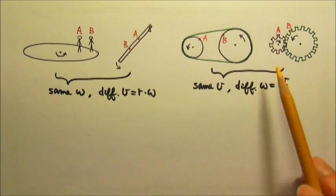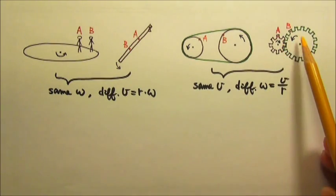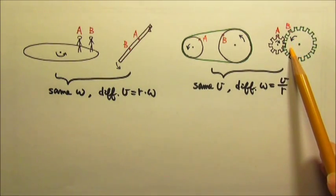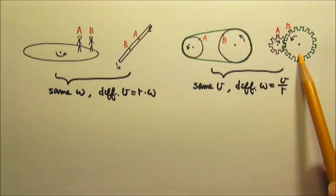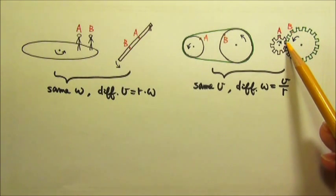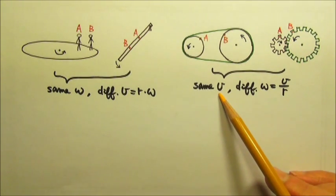For this one, when this gear moves one tooth, that one also moves by one tooth. And all the teeth have the same size, so they travel the same distance, which means the same linear speed.